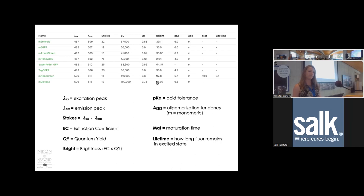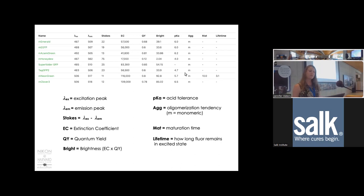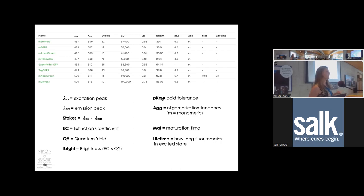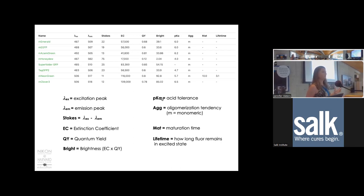Brightness is a nice starting point when looking for a bright fluorophore, but fluorophore behavior is very environment-dependent. pKa is the acid tolerance of the molecule—many fluorophores get dimmer in more acidic environments. So even if your fluorophore is very bright in vitro, if you're studying an acidic compartment like a lysosome, it might not perform as well. You want to understand how pH-stable your fluorophore is.